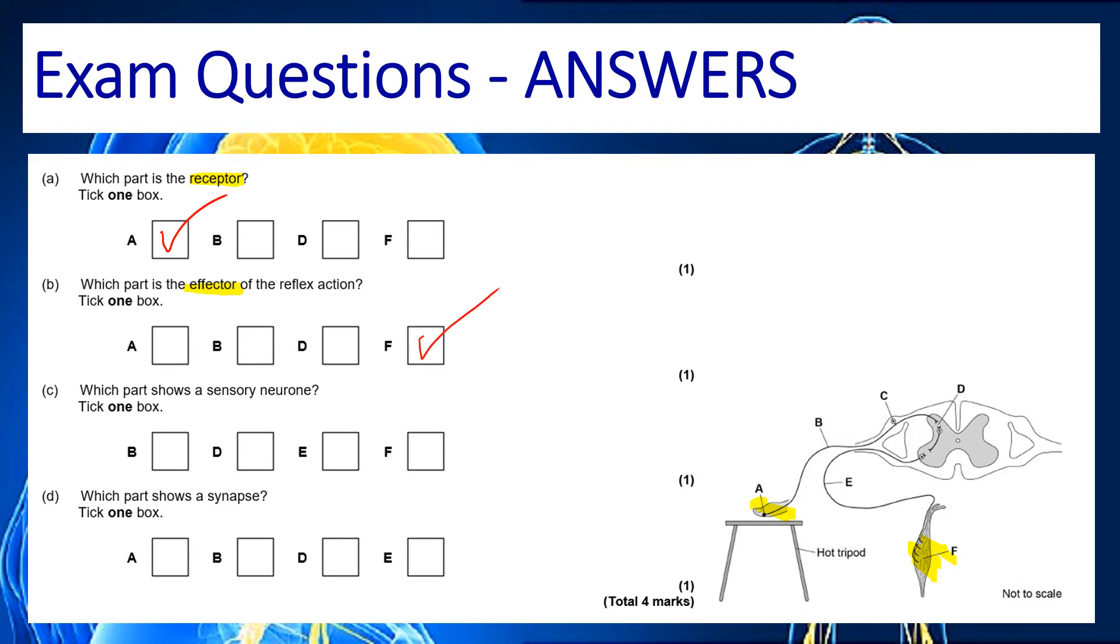Next question asks us to look for the sensory neuron if you remember that takes the information from the senses down to the brain or in this case the spinal cord so that answer is going to be B. And then the final question is asking us for the synapse that's the little gap so we're looking for a little gap which is just down here which is going to be D.